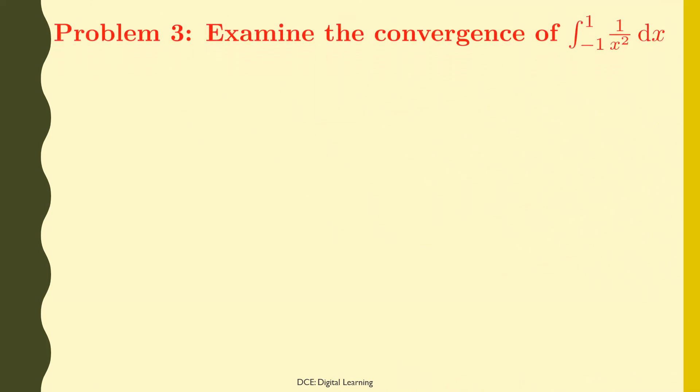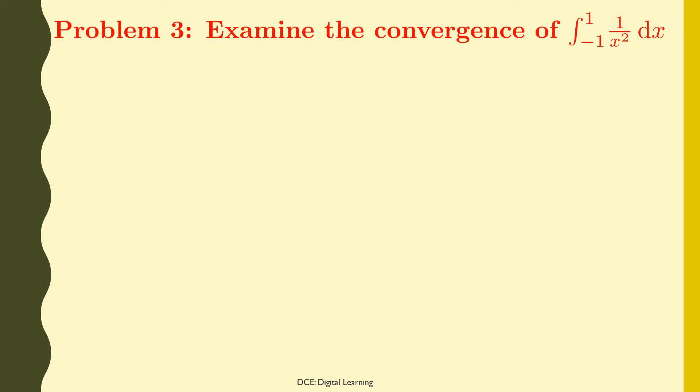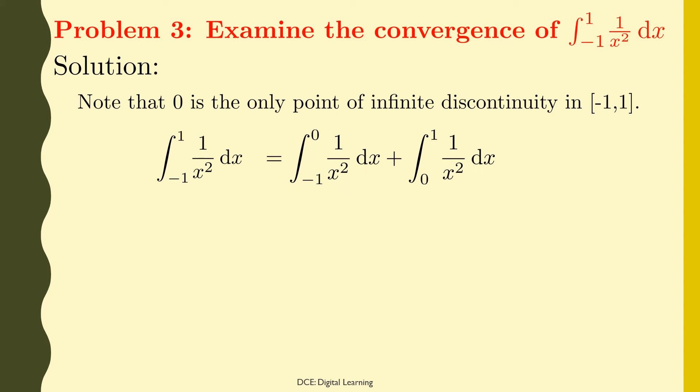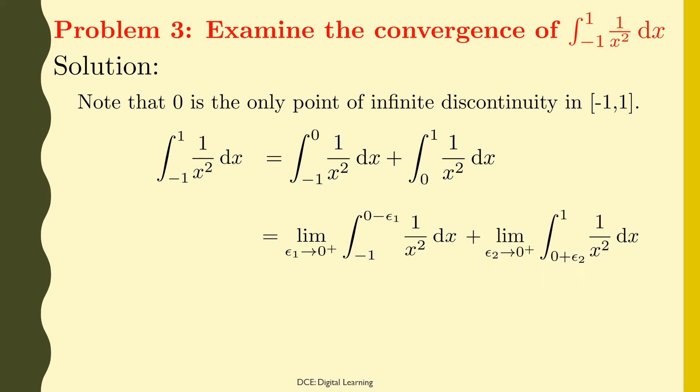Problem 3. Examine the convergence of the integral of 1/x² dx from −1 to 1. Solution. Note that 0 is the only point of infinite discontinuity in the domain of integration, the closed interval [−1, 1]. Therefore, the given integral of 1/x² dx from −1 to 1 equals the integral of 1/x² dx from −1 to 0 plus the integral of 1/x² dx from 0 to 1. This equals the limit of the integral of 1/x² dx from −1 to 0 − ε₁ as ε₁ tends to 0 from the right, plus the limit of the integral of 1/x² dx from 0 + ε₂ to 1 as ε₂ tends to 0 from the right.